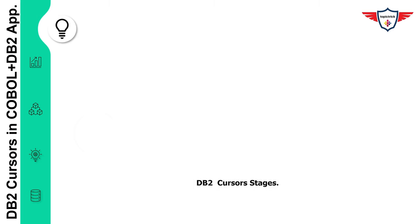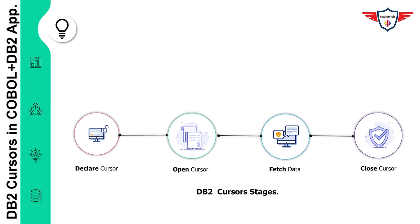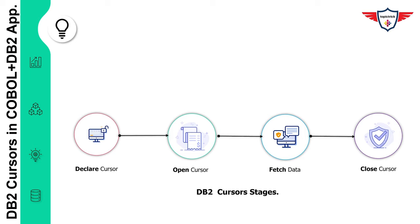The entire lifecycle of a cursor is divided into four stages: declare, open, fetch, and close. The DECLARE statement defines the cursor in your COBOL DB2 application, assigns it a unique name within the program, and defines the SQL statement — but it does not execute it. This is a common interview question: is the declare statement executable or not? The answer is it is not executable because it only defines, not executes, the SQL statement.